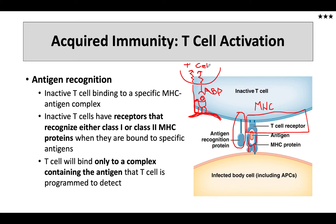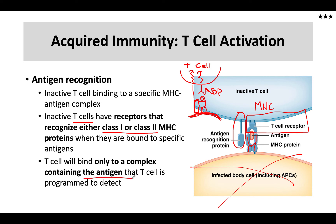From there, it really depends on what kind of T-cell we're dealing with. If we're dealing with a cytotoxic T-cell, the result is death of the infected or cancerous body cell. If we're dealing with a helper T-cell, it does something a little bit different. T-cells can recognize either class 1 or class 2 MHC — it depends on which MHC recognition protein they have and which one happens to bind with the complex. These antigen binding receptors are very, very specific and will complex with only one particular type of antigen that the T-cell is programmed to detect.